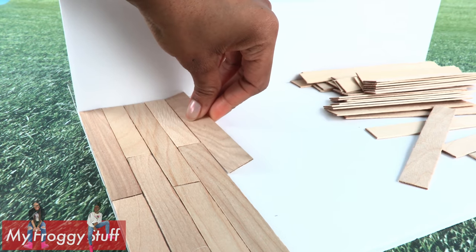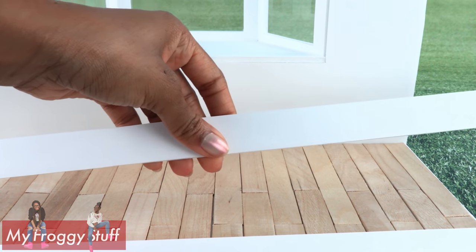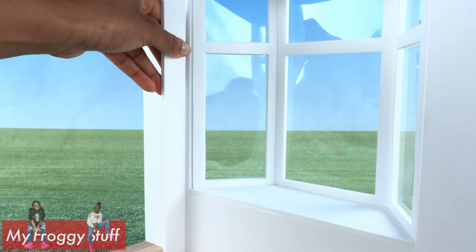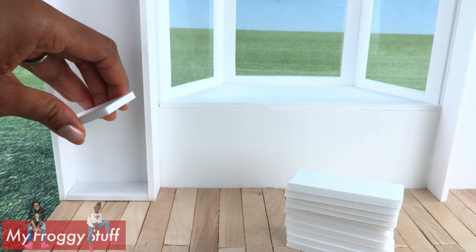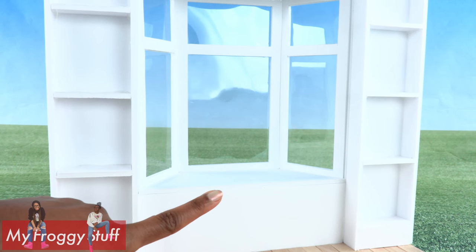Cut foam board into 1-inch strips. Glue them onto the walls on the sides of the window. I glued two on each side. Cut smaller pieces to glue between to make two shelving units on the sides.